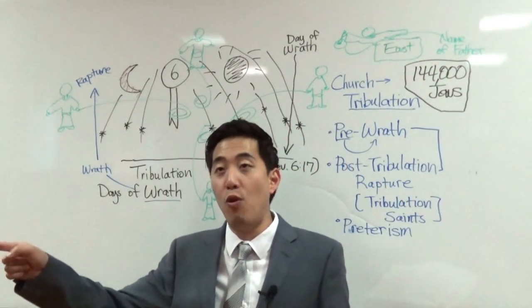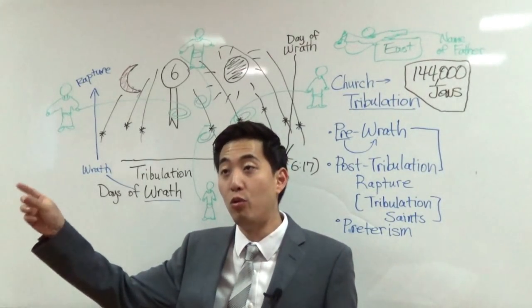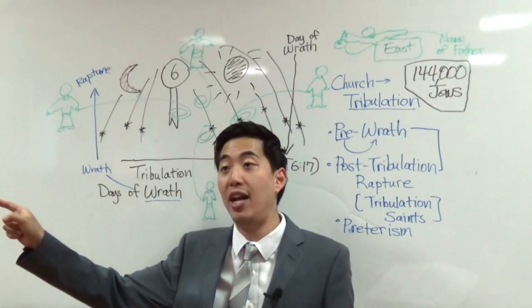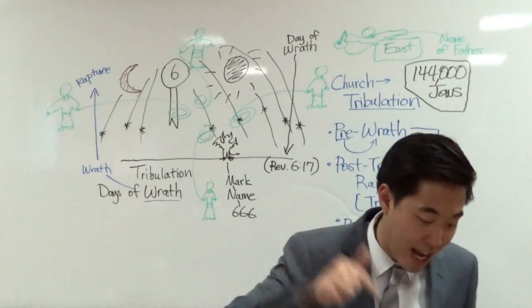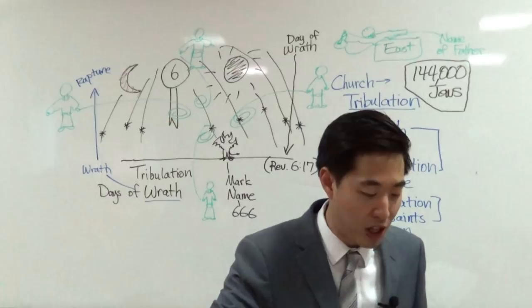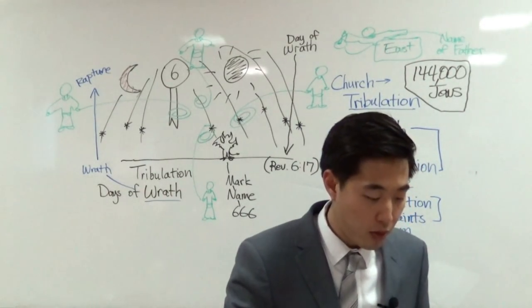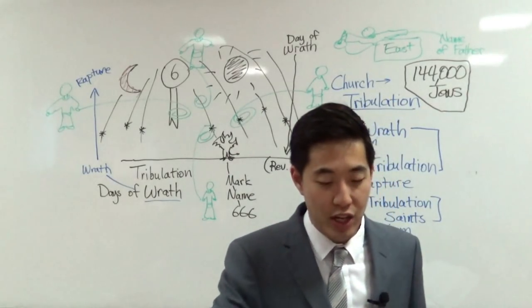Remember Matthew 24, abomination of desolation spoken of by Daniel, which I showed you last week at Revelation. This makes sense. This is referring to the tribulation timeline where the Jews received the sealing of God. Let's go back to Revelation chapter 7. So you're going to have 144,000 Jews who have the seal of God on their foreheads.